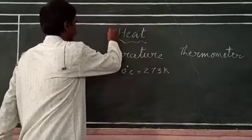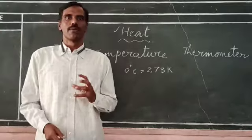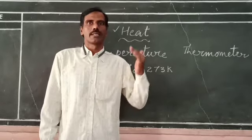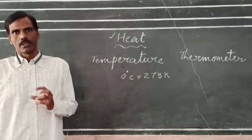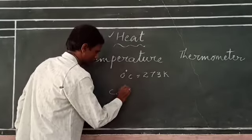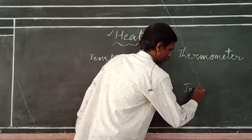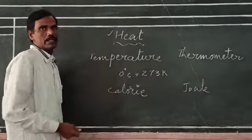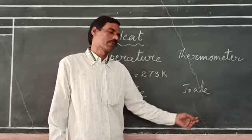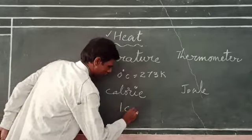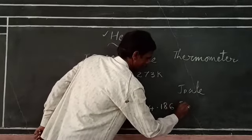Now we have to discuss the topic heat. Heat is a form of energy which flows from a body at higher temperature to a body at lower temperature. It is measured in calorie or joule. Calorie is the CGS system of unit whereas joule is the SI system of unit.